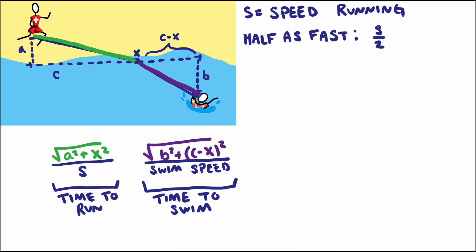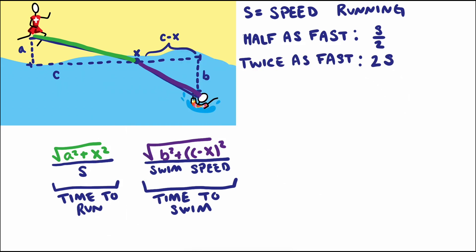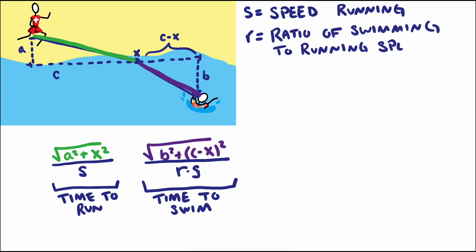Or if she swam twice as fast as she ran, can you imagine that? Then her swimming speed could be written 2s. In general, we could write her swimming speed r times s, where r is the ratio of how her swimming speed compares to her running speed. Dividing the distance swam by this speed gets us her time spent swimming.